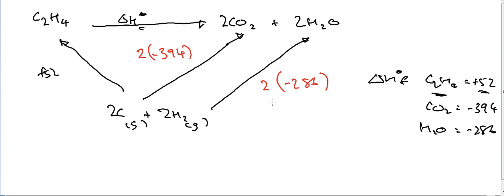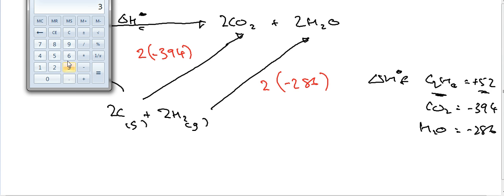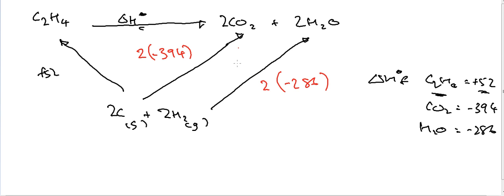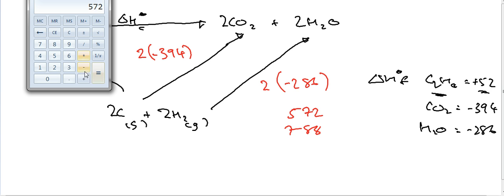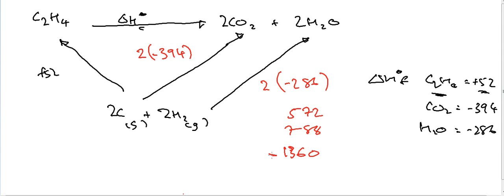Okay, so let's do the math for this. Two lots of minus 394, times two, that's 788. Two lots of 286, times two, that's 572. So 788 plus 572 equals 1360, and it's minus 1360 kilojoules.